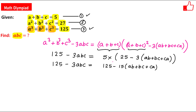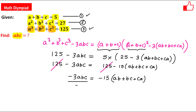Now let us simplify. We have 5 into 25 which is 125, and 5 into 3 is 15 times (ab plus bc plus ca). Now 125 cancels out on both sides, so we are left with: minus 3abc equals minus 15 times (ab plus bc plus ca). Dividing both sides by minus 3, we get abc equals 5 times (ab plus bc plus ca). Let us call this equation 4.